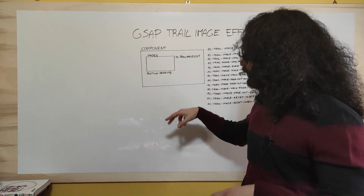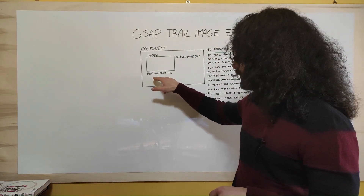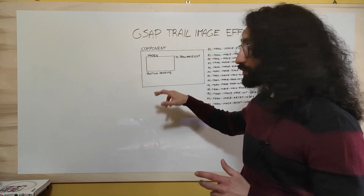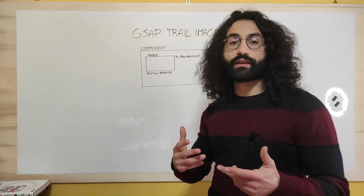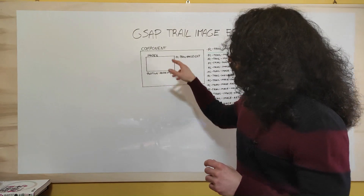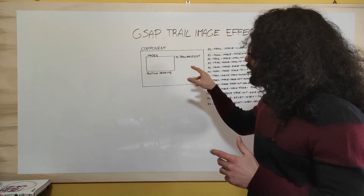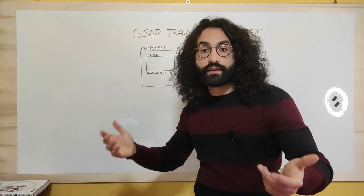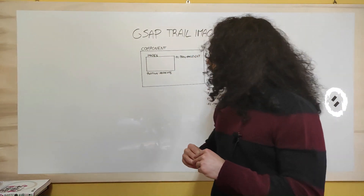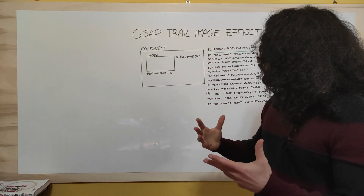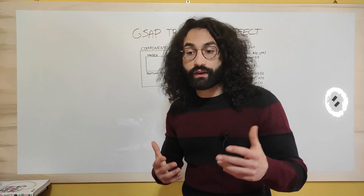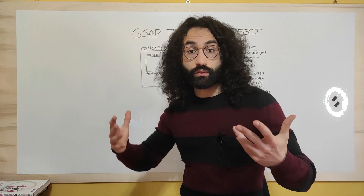When inside Webflow, we are also going to set the position of the image wrapper to absolute — but we are going to do that just to not mess up the layout of the component, because inside the component we could have text or other images. Then it's just a matter of using the right attributes to customize the effect as much as we want.